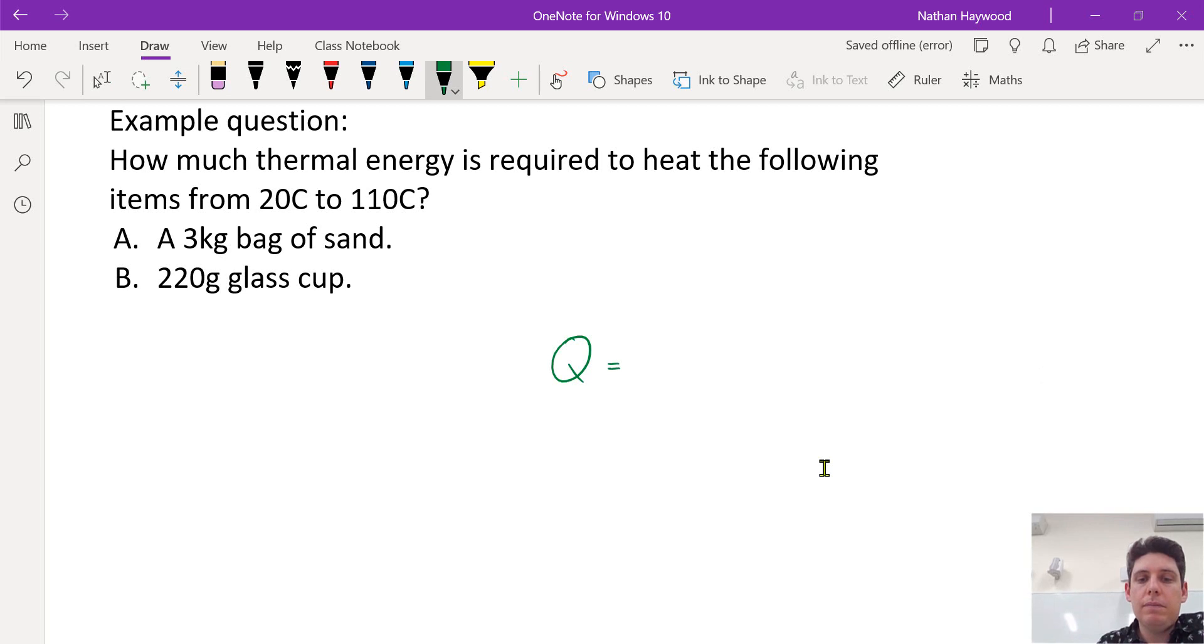How much thermal energy is required to heat the following items from 20 C to 110 C. We use our formula. Thermal energy required is the mass times the specific heat capacity times the change in temperature. So we have our mass, we have our change in temperature, but we don't know our specific heat capacity.